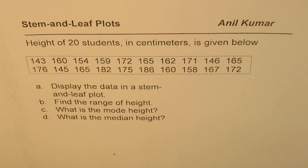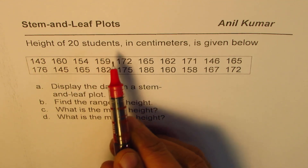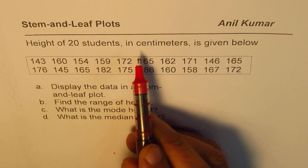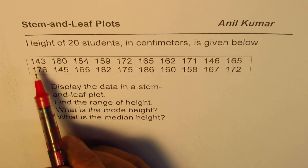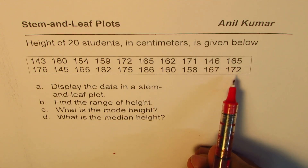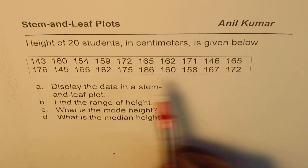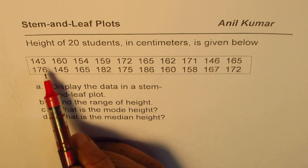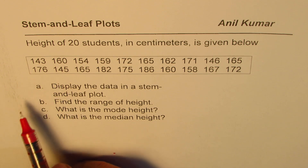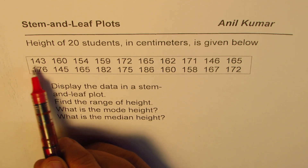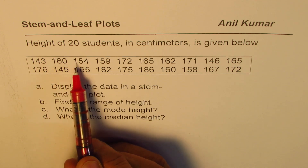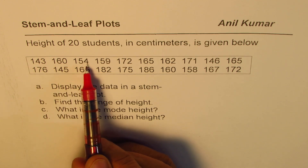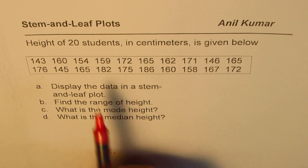Let's take up an example. The height of 20 students in centimeters is given below. This is what we normally refer to as raw data — 143 centimeters, 160 centimeters, 154 centimeters, and so on.